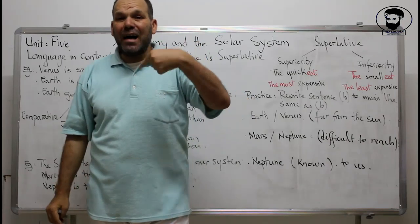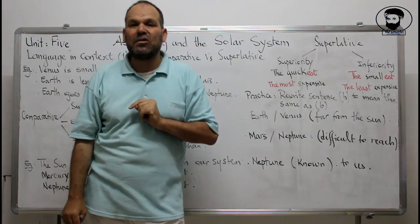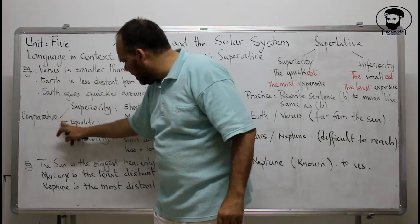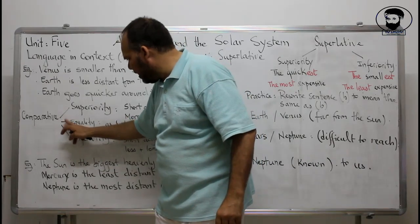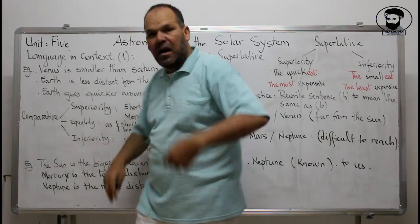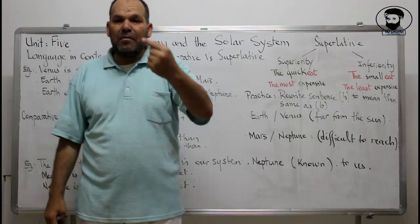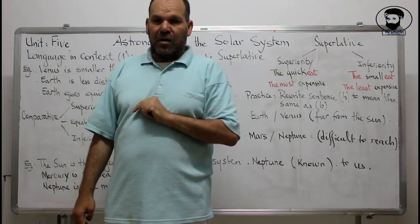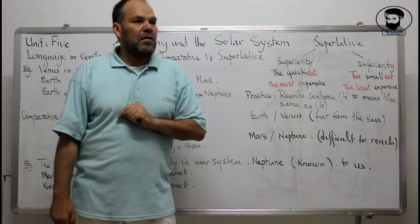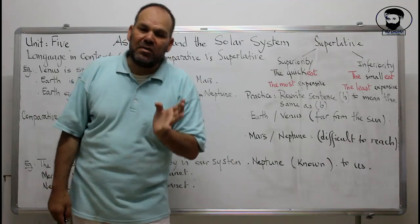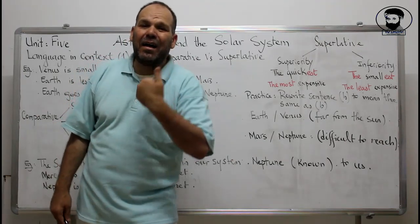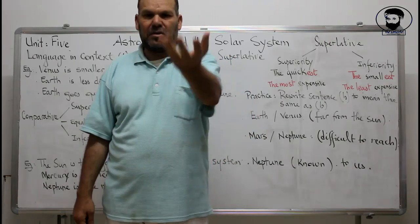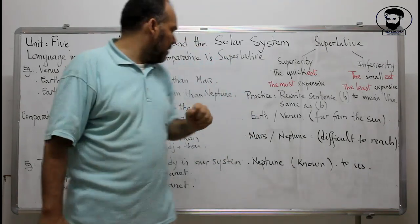For inequality you say 'not as...as': for example, 'I am not as tall as you' or 'I am not as intelligent as you.' For example: 'Most of the pupils in our classroom are not as serious as I am.' This negative form expresses inequality.